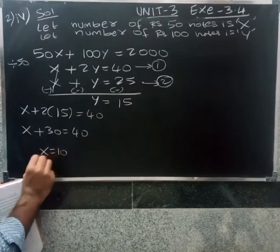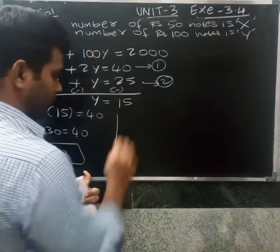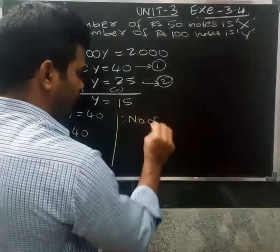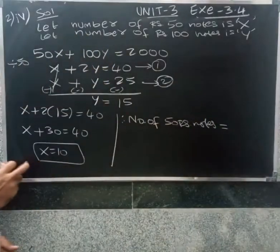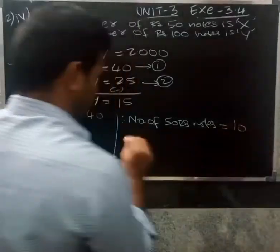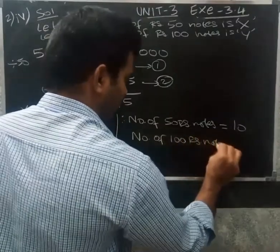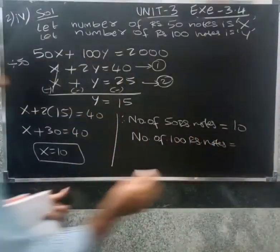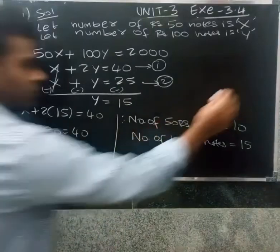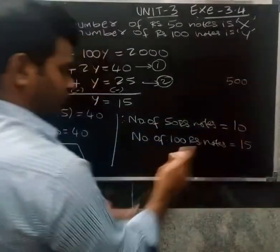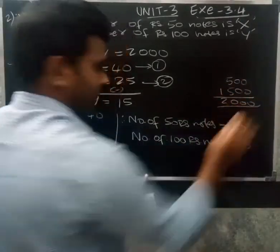Therefore, the number of 50-rupee notes is x equals 10, and the number of 100-rupee notes is y equals 15. Verification: 10 notes of 50 rupees gives 500, and 15 notes of 100 rupees gives 1500. Total is 500 plus 1500 equals 2000. Correct!